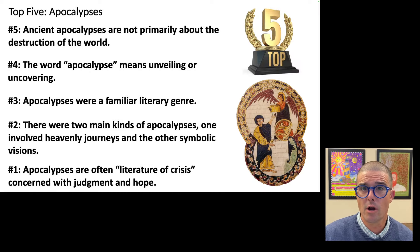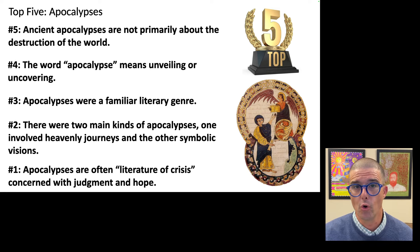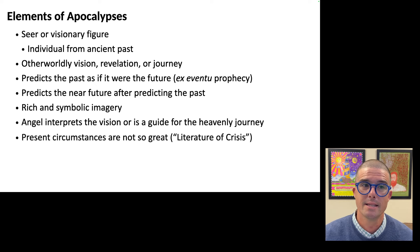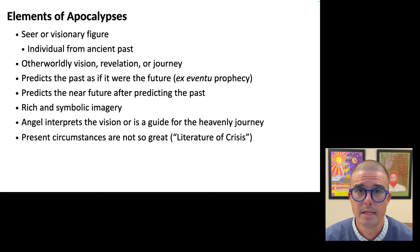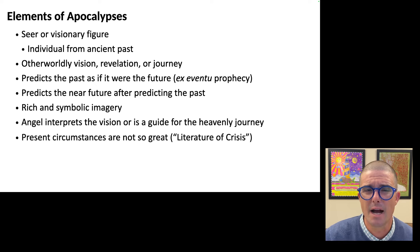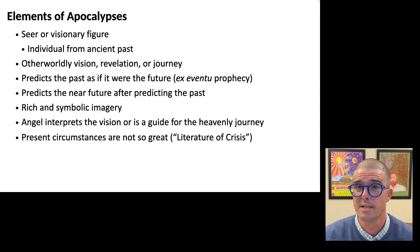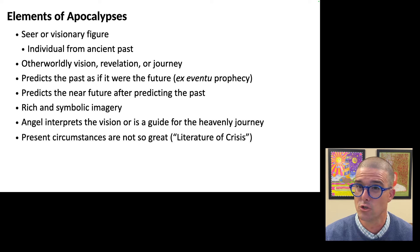And number one: apocalypses are often literature of crisis, concerned with judgment and hope. There are two more characteristic features of apocalypses that I have not yet mentioned. These two have as much to do with the context in which apocalypses were written as they do with what is in the apocalypses. First, apocalypses were written in contexts in which the present circumstances were not all that great. Usually the person or group that wrote the apocalypse, or the group for which they were writing, were facing some kind of suffering or persecution — and this suffering and persecution might be actual and real, or it might simply be perceived. It's in this way that apocalypses are literature of crisis — literature of the oppressed. This is why apocalypses so often use violent, dramatic, and catastrophic imagery.